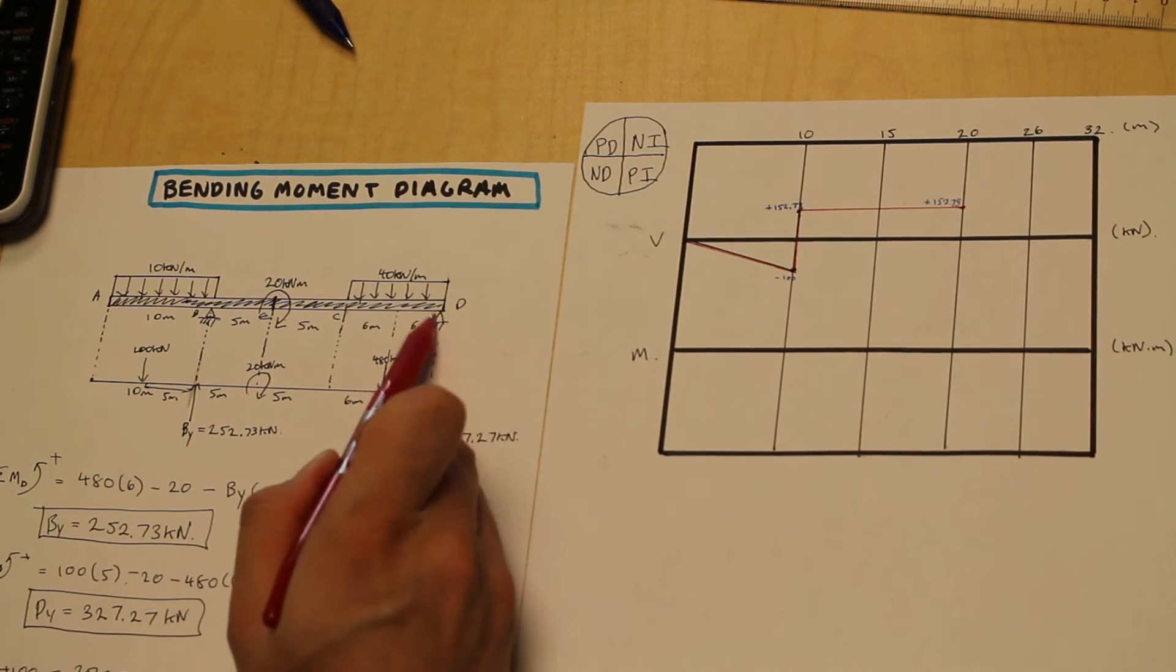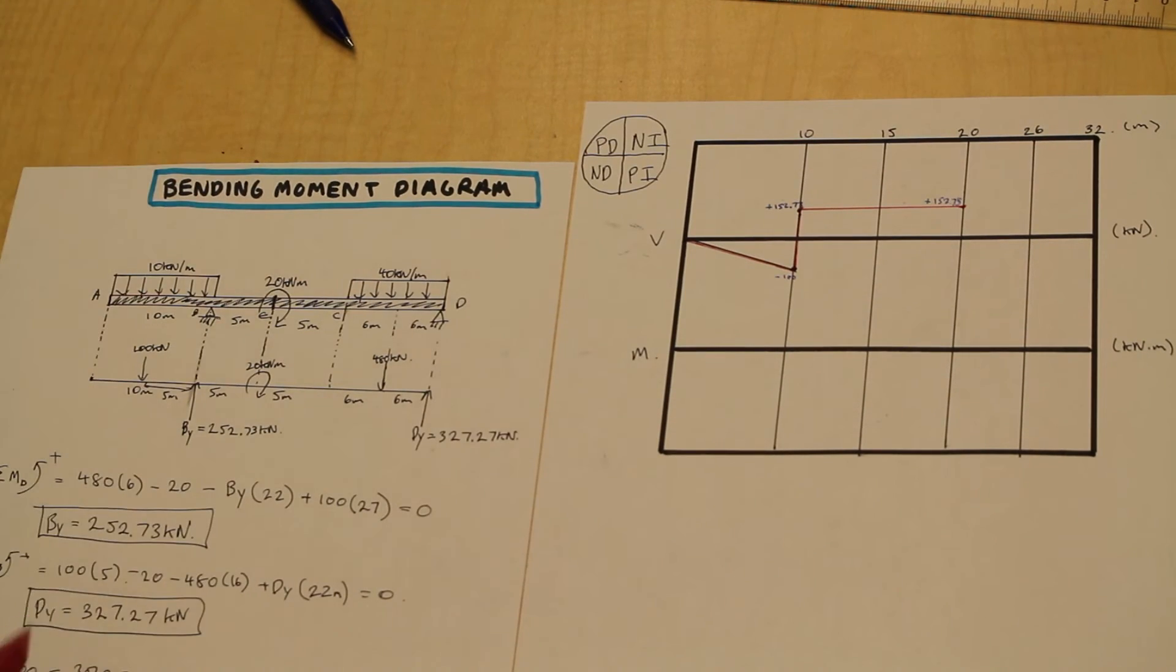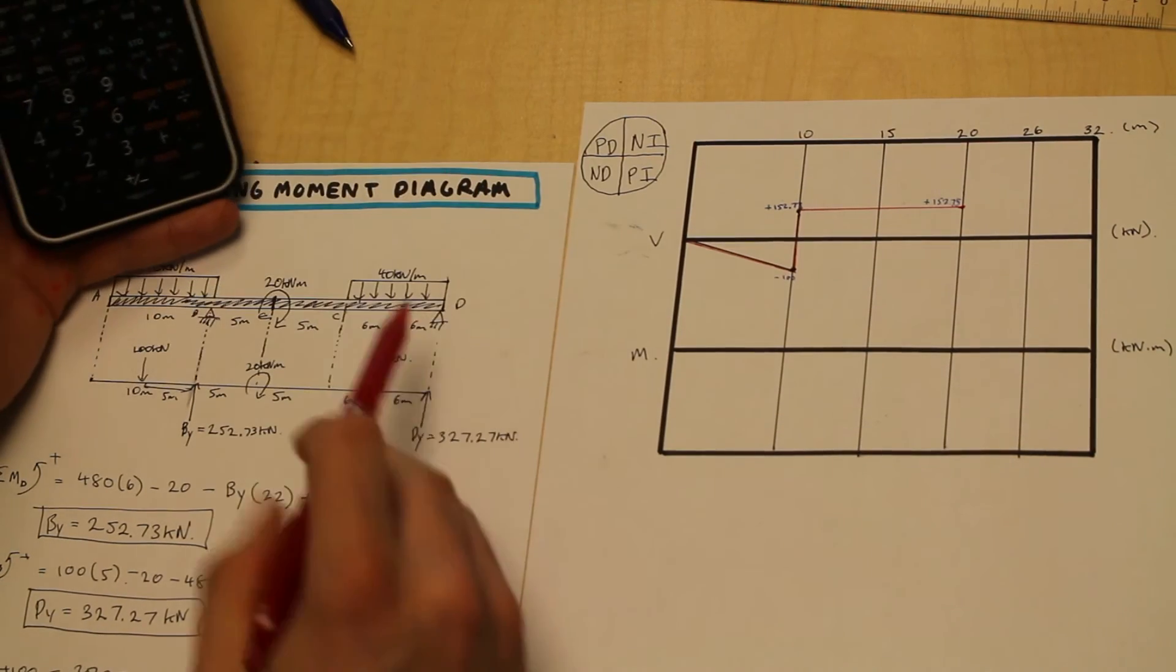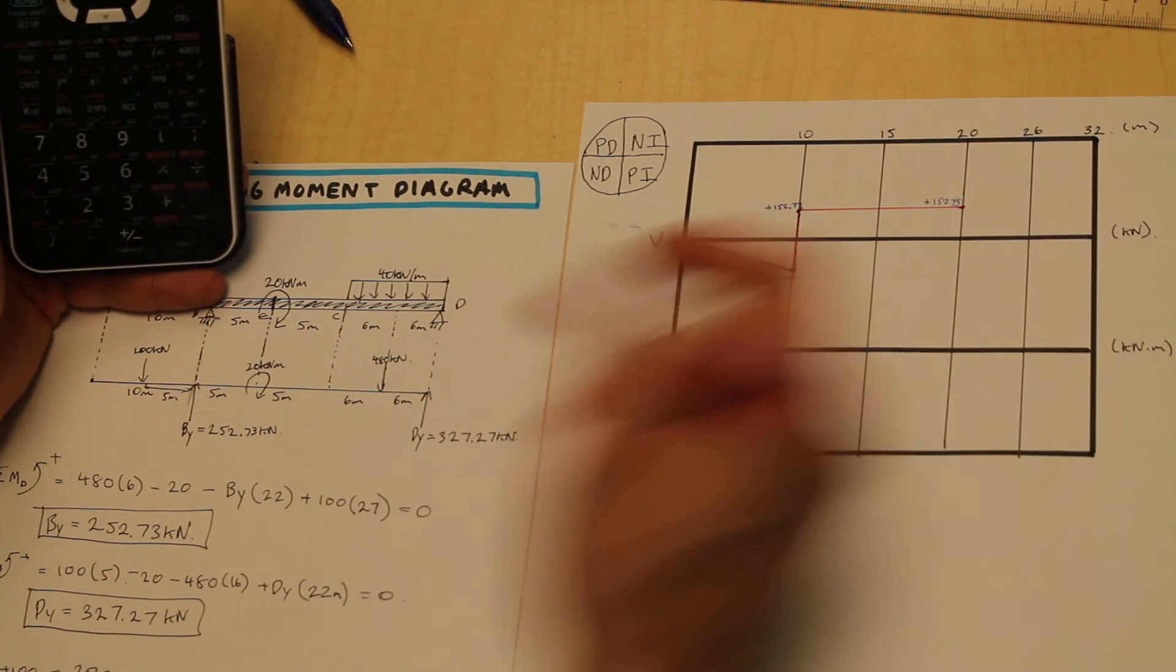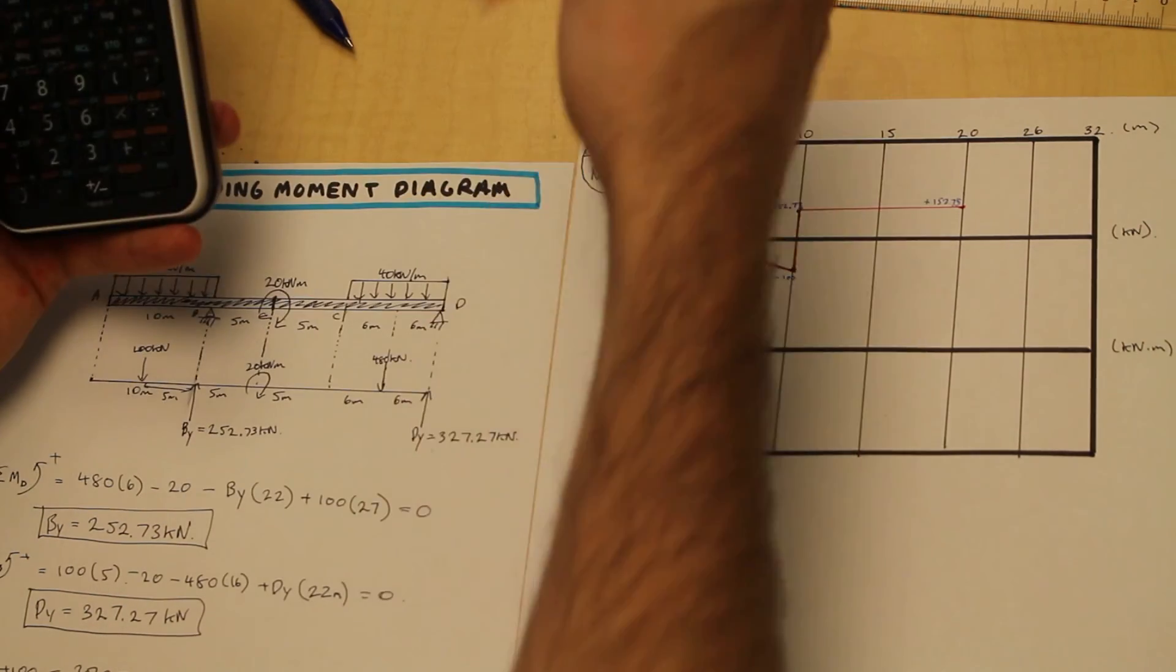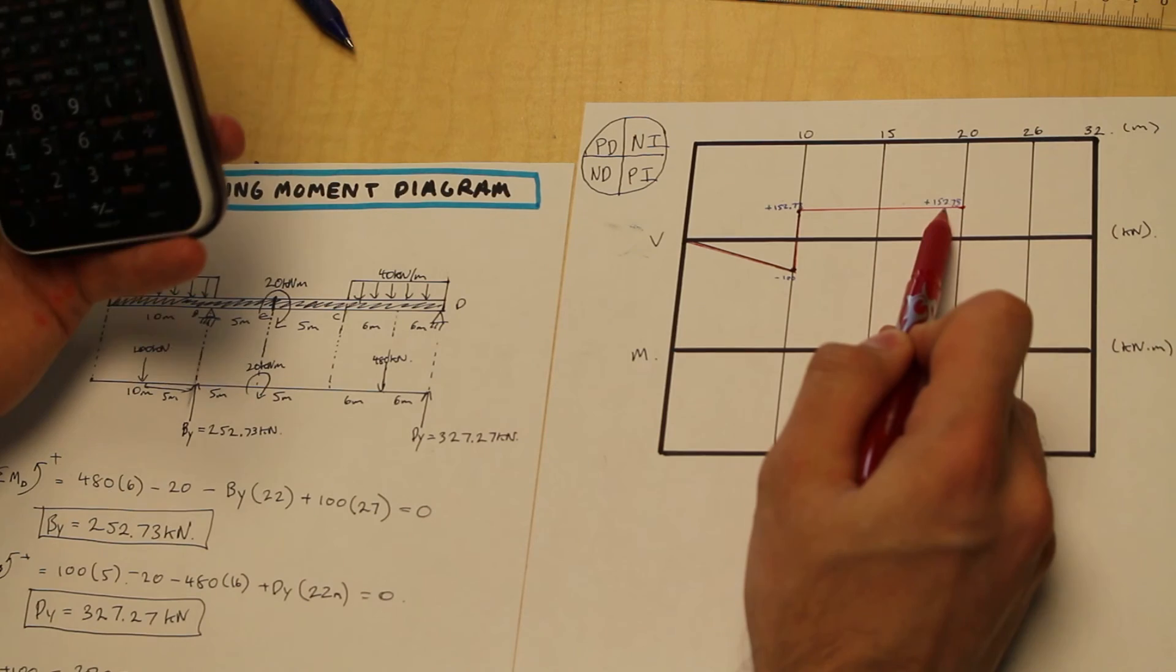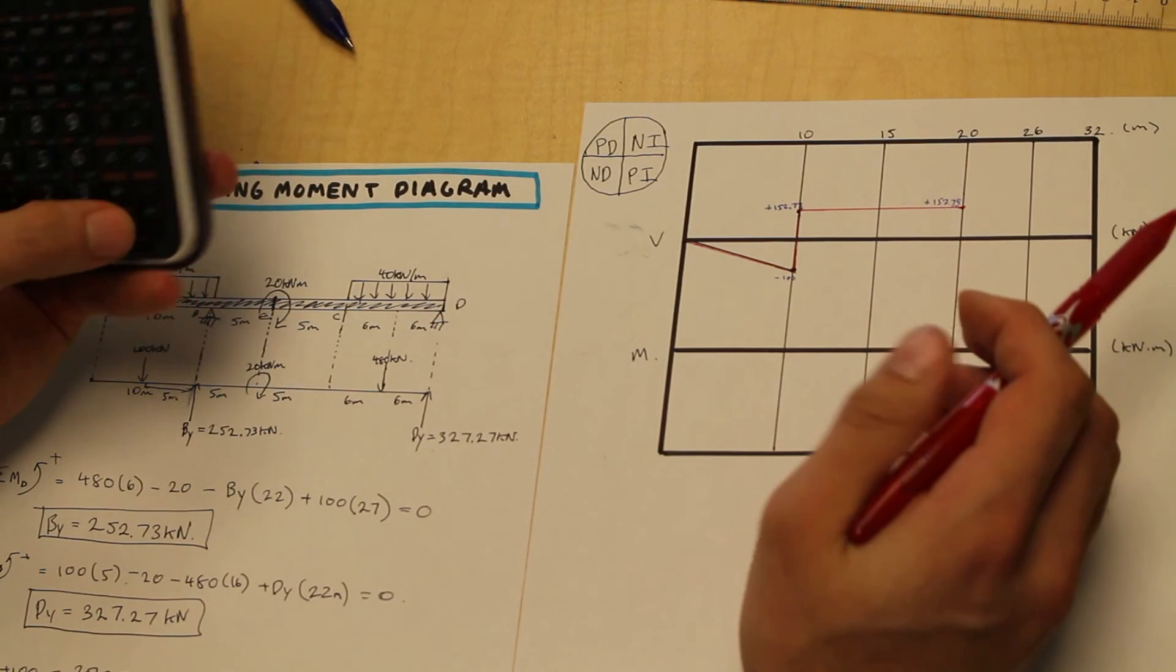And from C to D, what do we have? We have a distributed load acting downwards in the negative direction. So what do we do? We multiply 40 kilonewtons per meter by the distance, which is 12, which is going to give us 480. So that's a negative, obviously, because it's acting down. And we're going to add that to the shear that we have here, which is positive because it's above the x-axis and it's 152.73.